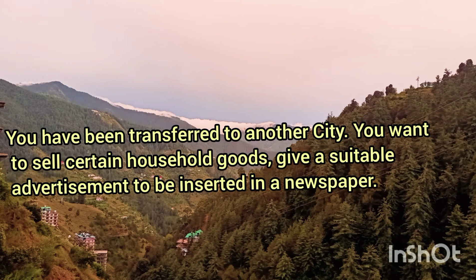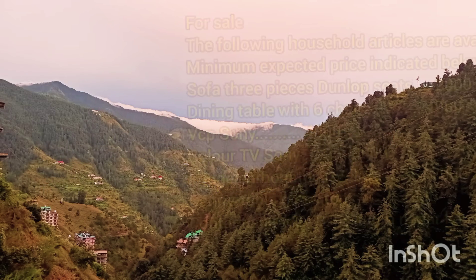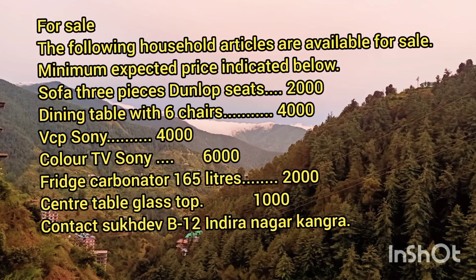Next question: you have been transferred to another city and you want to sell certain household goods. Give a suitable advertisement to be inserted in a newspaper. First write 'FOR SALE' in capital letters. Then write: The following household articles are available for sale at the minimum expected price indicated below. Sofa 3 pieces with download seats: 2000. Dining table with six chairs: 4000. VCP Sony: 4000. Color TV Sony: 6000.